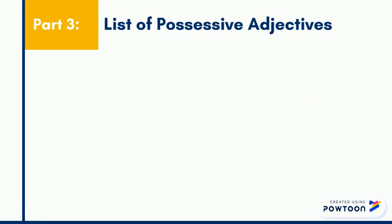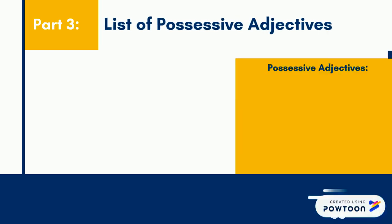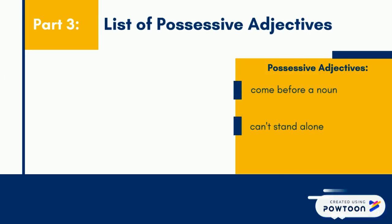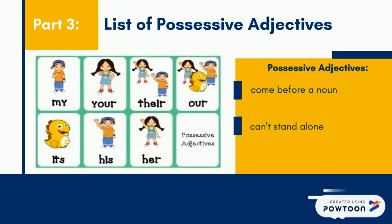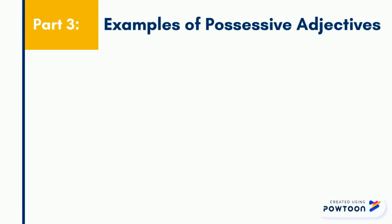Always remember that possessive adjectives come before a noun and can't stand alone. Here's a list of possessive adjectives: my, her, his, its, your, our, and their. Here are some examples.